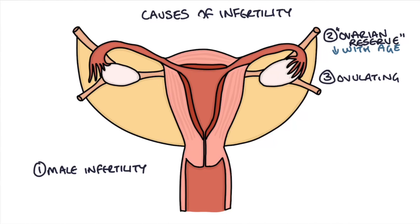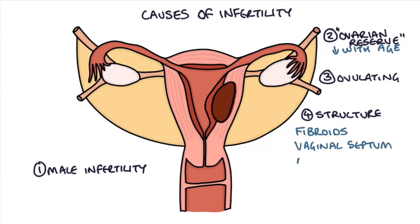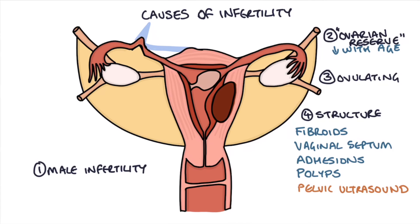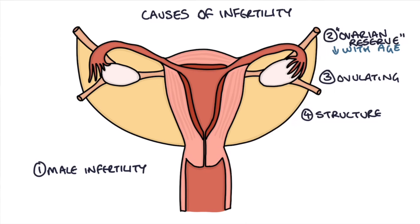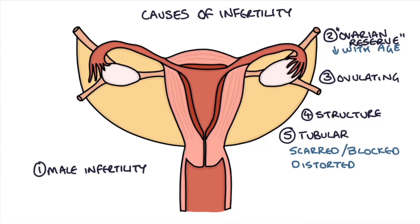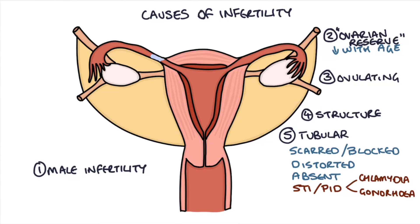If the woman is ovulating and the man has adequate sperm, we need to ensure the egg and sperm can meet. Structural abnormalities in the uterus — such as large fibroids, vaginal septums, adhesions, or polyps — can be a barrier. These can be assessed with a pelvic ultrasound scan. Tubal problems are another barrier: the tubes can become scarred, blocked, distorted, or absent. The most common cause is damage from sexually transmitted infections — particularly chlamydia or gonorrhoea causing pelvic inflammatory disease — or adhesions from previous surgery or endometriosis.